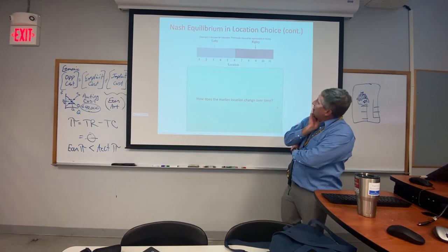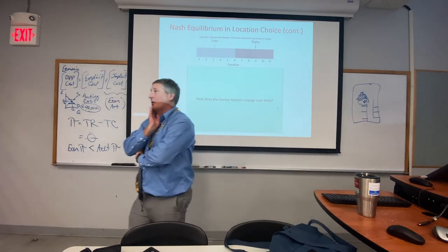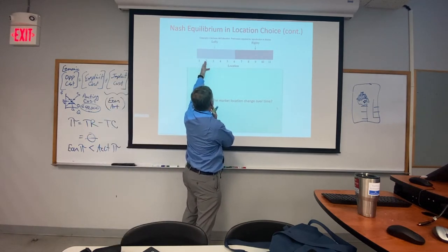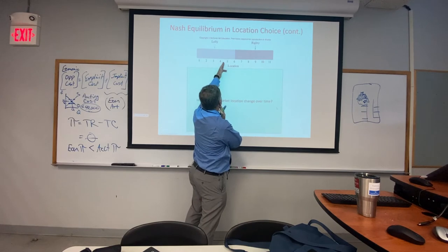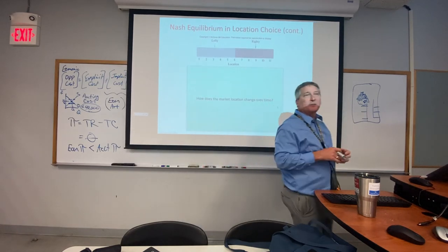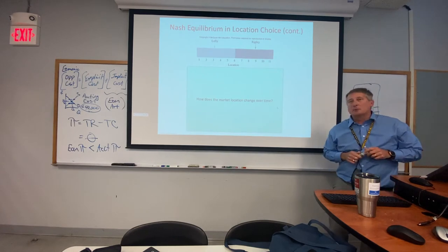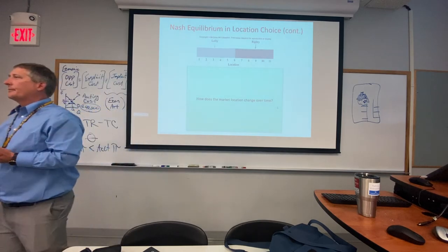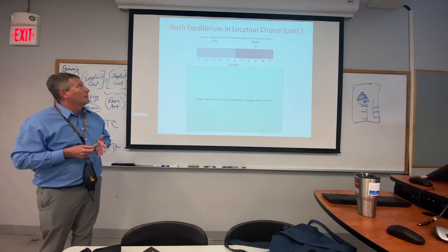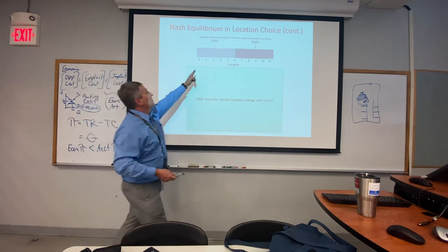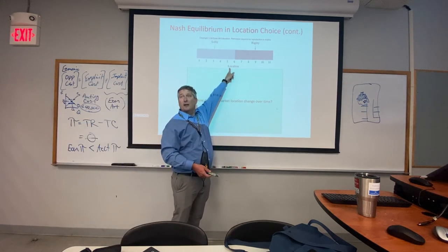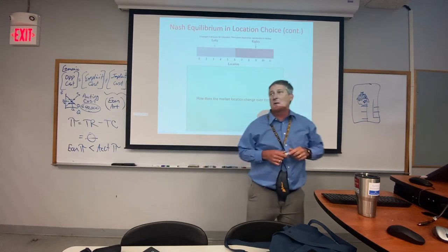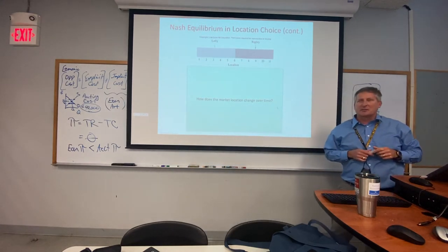So by moving toward the center, Lefty picks up market share — specifically stealing consumer six. The original customers still come because Lefty is still the closest option. Julian also notes that Righty might be making more money than Lefty, so moving toward six could equalize their profits. This is a profitable move: you gain customers from the middle without losing your end customers.